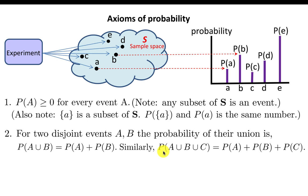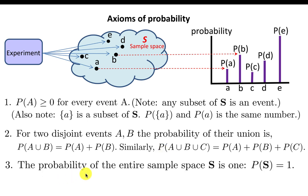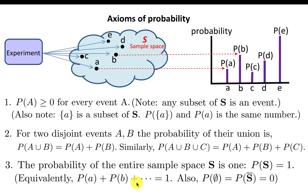The third axiom is that the probability of the entire sample space is 1 — P(S) = 1 — which says that certainly something will happen. So if I flip a coin, I'll definitely get either a head or a tail. More formally: P(A) + P(B) + all other possibilities must sum to 1. Obviously, the probability of nothing happening is 0 — that's the same as saying the probability of the complement of S is 0. These three axioms distill for us the very meaning of probability.